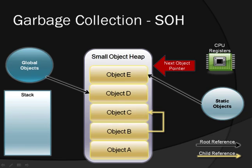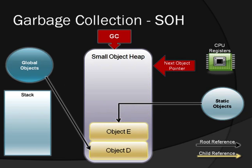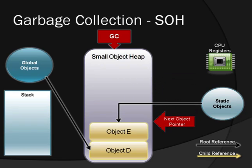On the screen, objects A, B and C are rootless, and so when the garbage collector runs, it will copy objects D and E over the top of objects A, B and C, and reset the next object pointer. The garbage collector runs, it identifies A, B and C as rootless, and copies D and E over them, and now resets the next object pointer. Garbage collection finishes, and we're now ready to allocate new objects.